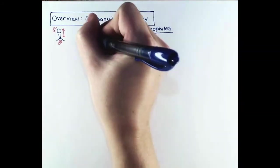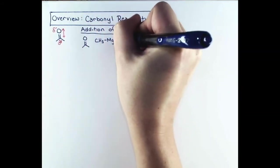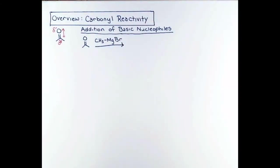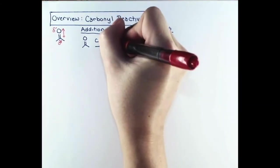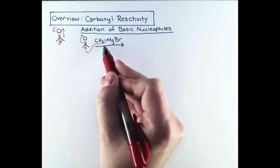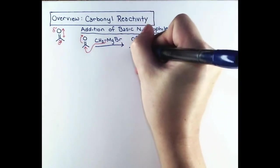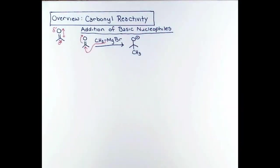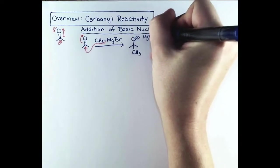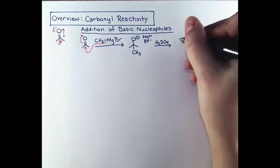In a Grignard reaction, the Grignard carbon has lots of negative charge concentrated on it. So the nucleophilic carbon of the Grignard reagent is going to attack at the electropositive carbon atom, pushing the electrons up onto oxygen. Then a second stage of the reaction is carried out, where dilute acid is added, to give the oxygen a proton and form an alcohol.